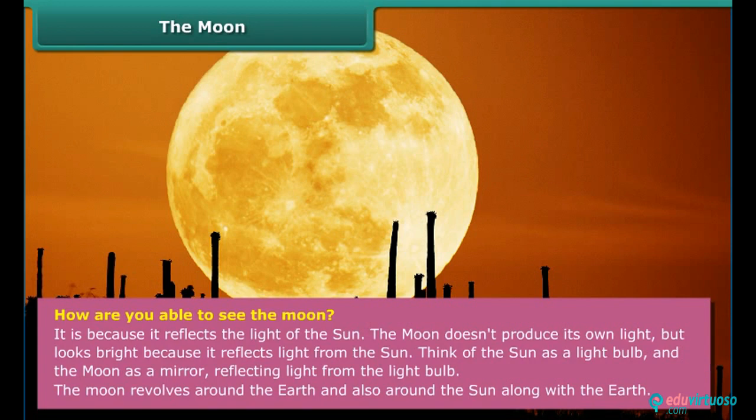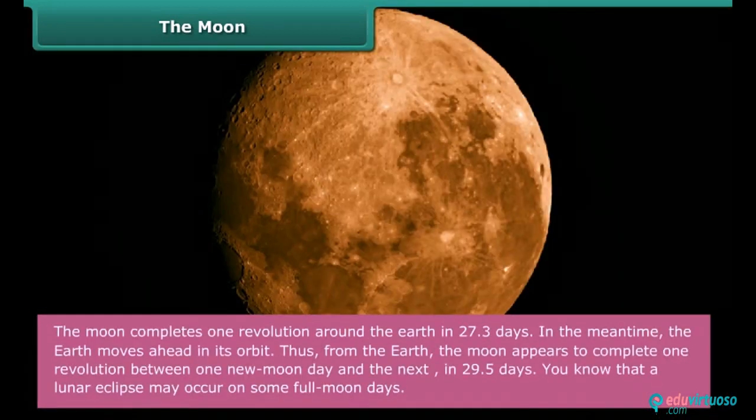The Moon revolves around the Earth and also around the Sun along with the Earth. The Moon completes one revolution around the Earth in 27.3 days. In the meantime, the Earth moves ahead in its orbit. Thus, from the Earth, the Moon appears to complete one revolution between one Moon day and the next in 29.5 days. You know that a lunar eclipse may occur on some full Moon days.